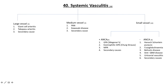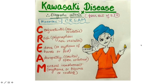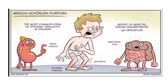Urticarial vasculitis is usually hypocomplementemic small vessel leukocytoclastic urticarial vasculitis. For Kawasaki disease, a nice mnemonic is CREAM — you need four out of five criteria: C for conjunctivitis (classically non-exudative), R for rash (polymorphous, non-vesicular), E for edema or erythema of the hands or feet, A for adenopathy (cervical or unilateral), and M for mucosal involvement with erythema or crusting features.